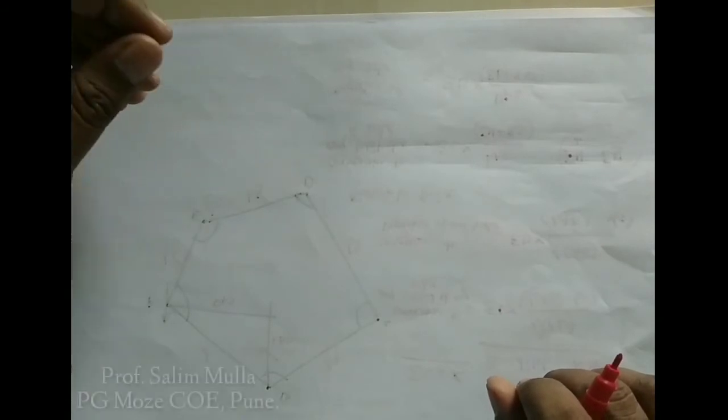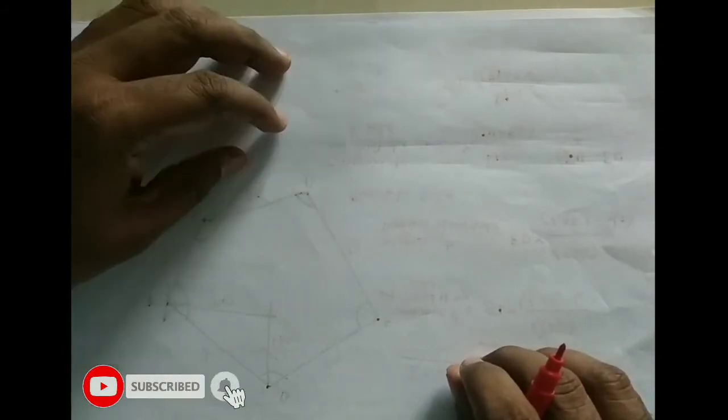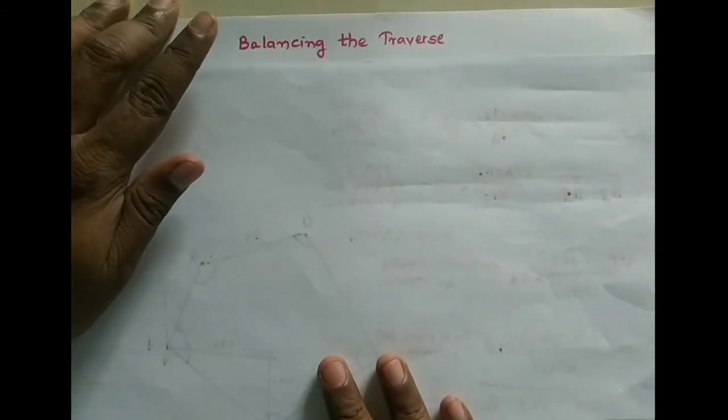Hello everyone, welcome back. In the last video lectures we covered latitudes and departures, independent coordinates, how to calculate the area of a closed traverse using independent coordinates, and how to calculate the closing error. When we plot a closed traverse on paper, it contains errors in latitudes and departures that must be corrected. That process is known as balancing the traverse.